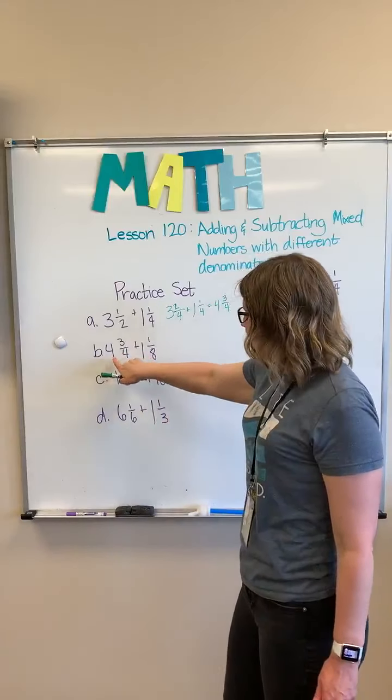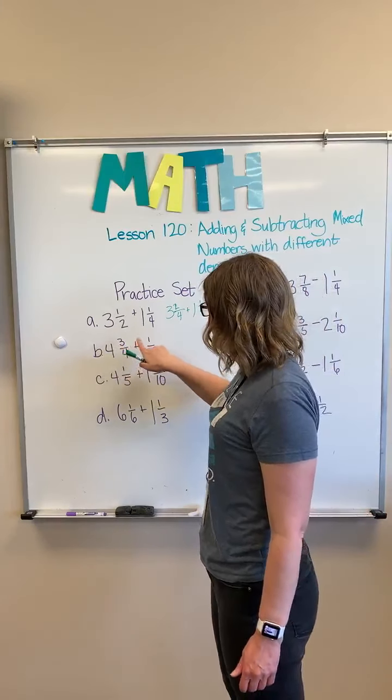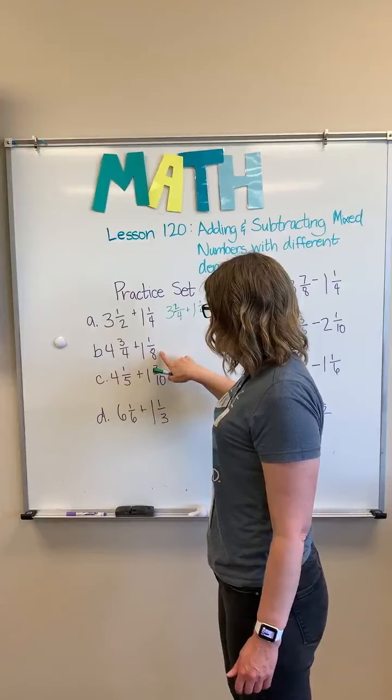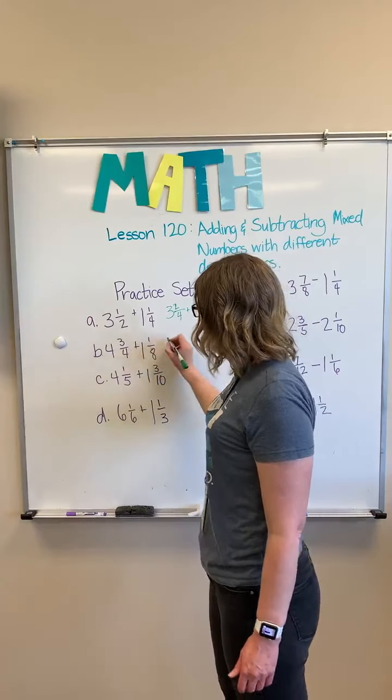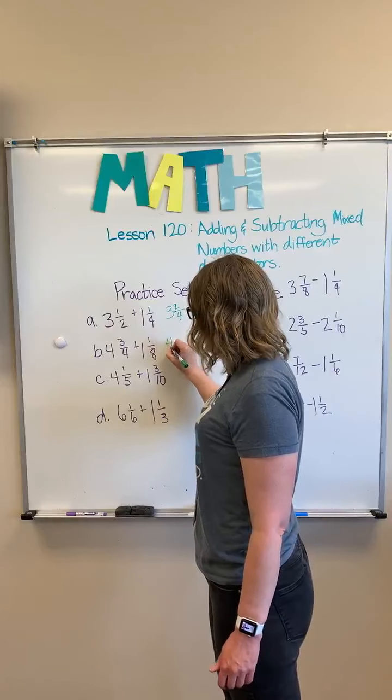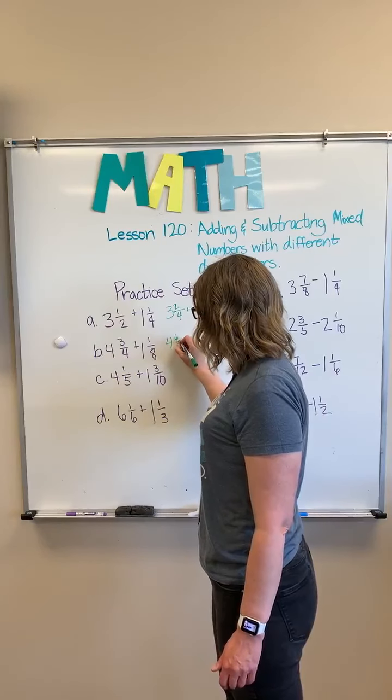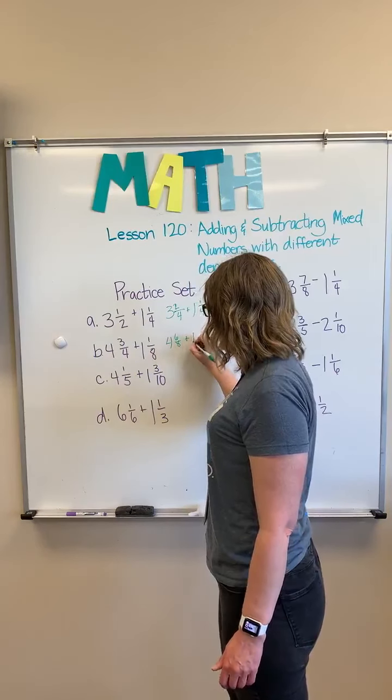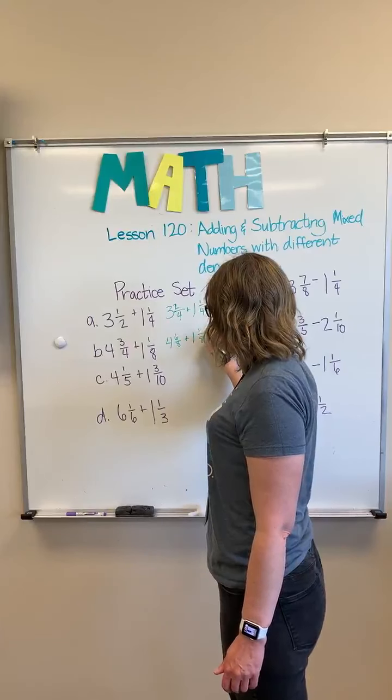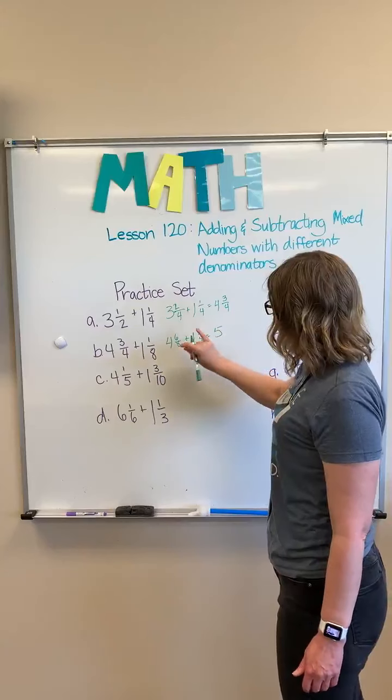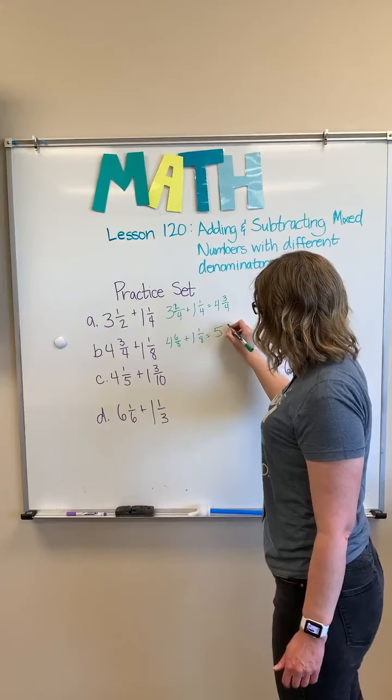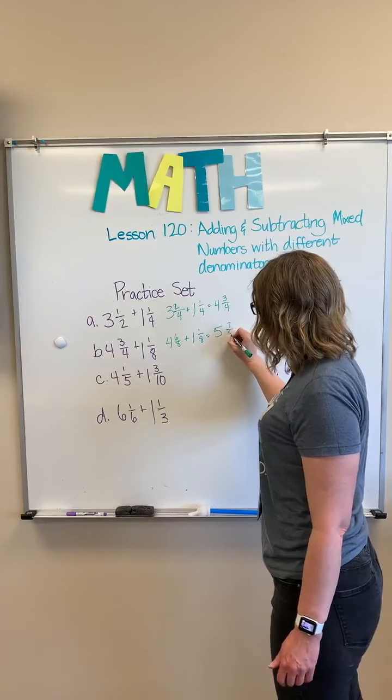Our next one, four and three fourths plus one and one eighth. I'm keeping my eight the same but I'm going to change this three fourths to four and six eighths plus one and one eighth, and that ends up giving me five and seven eighths.